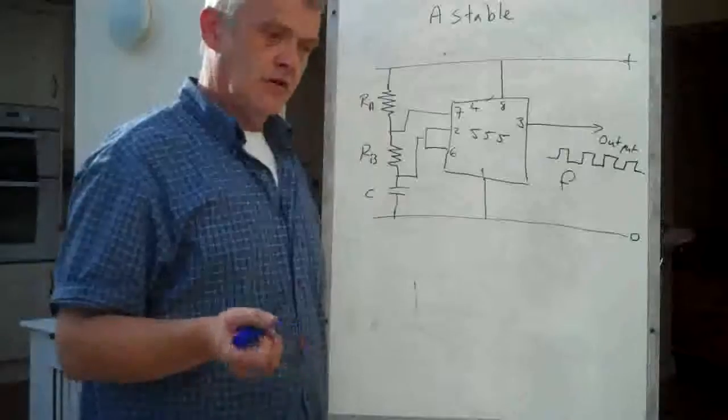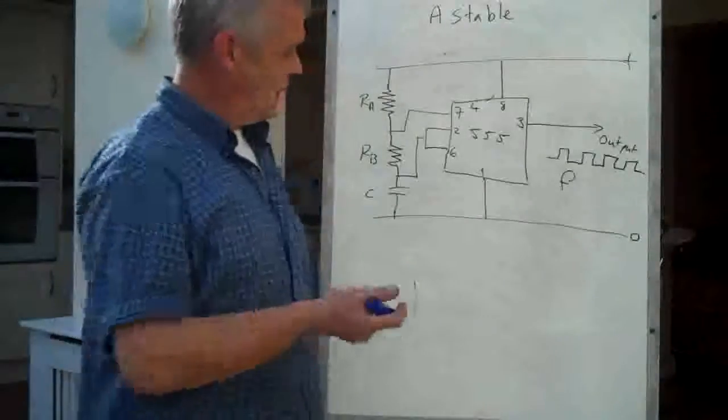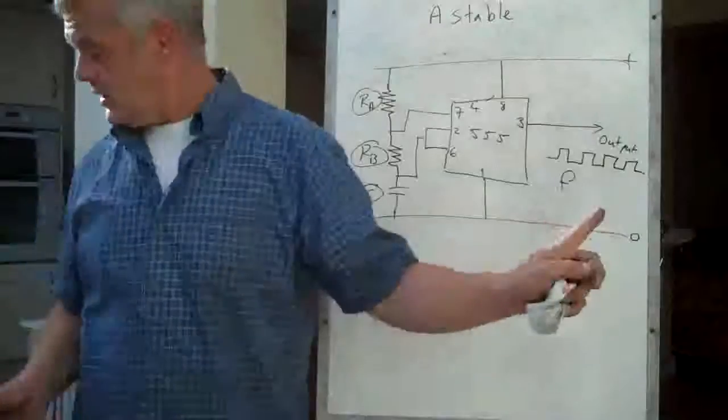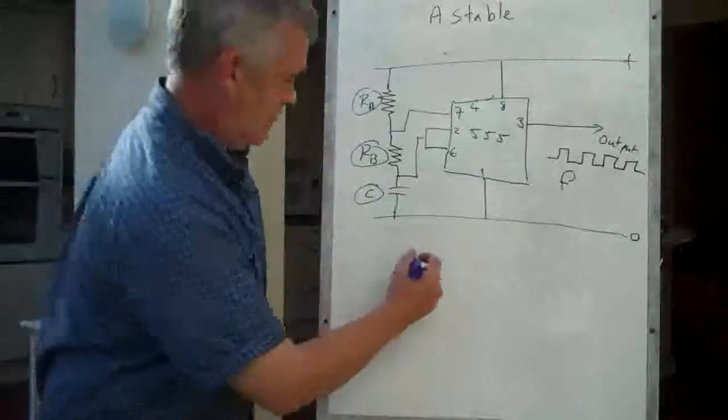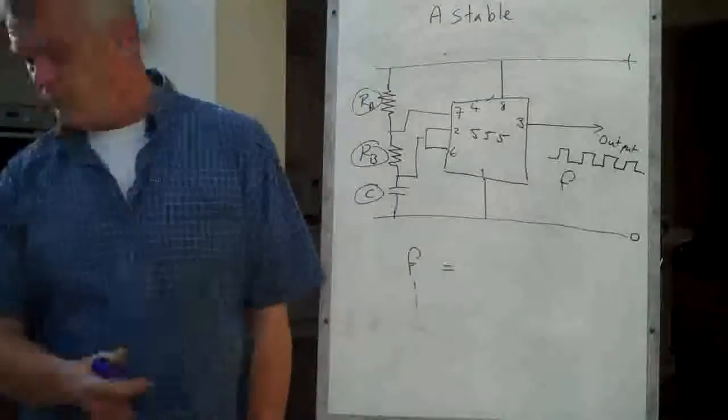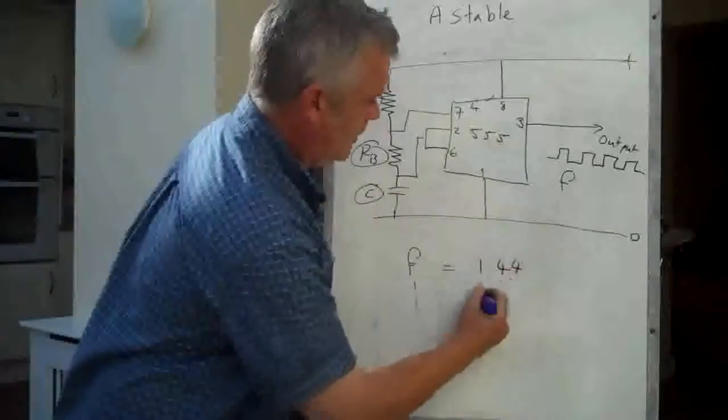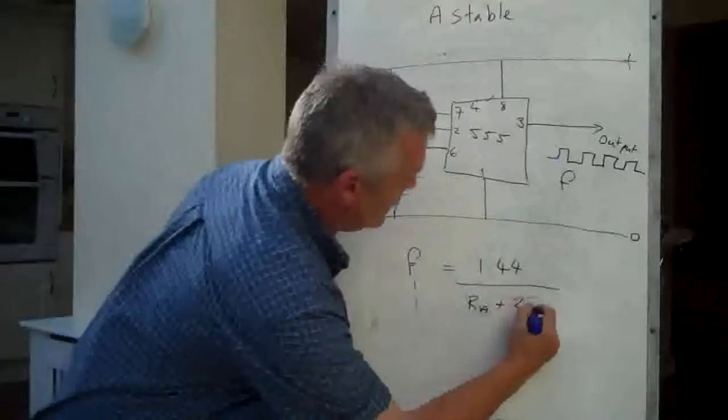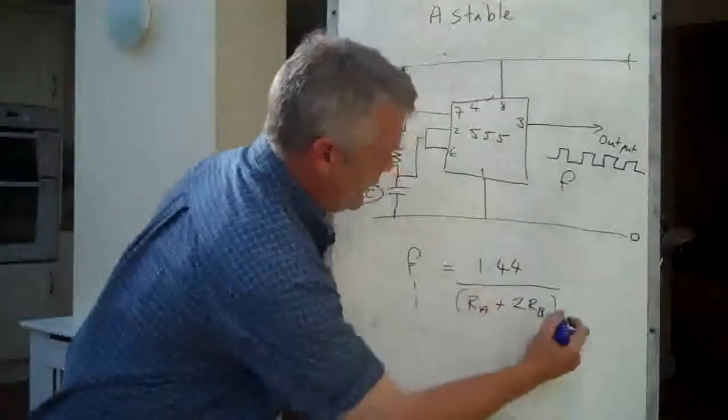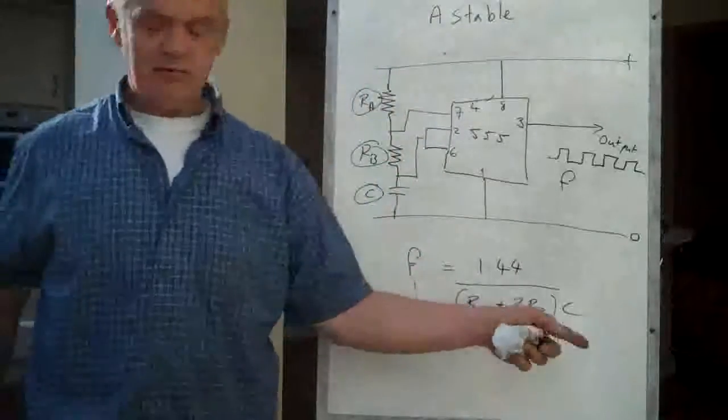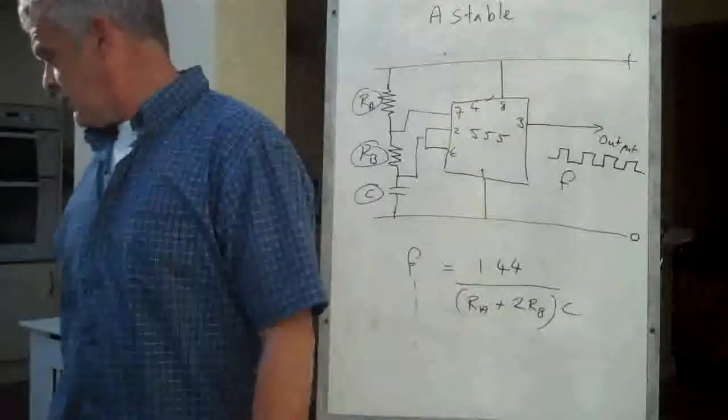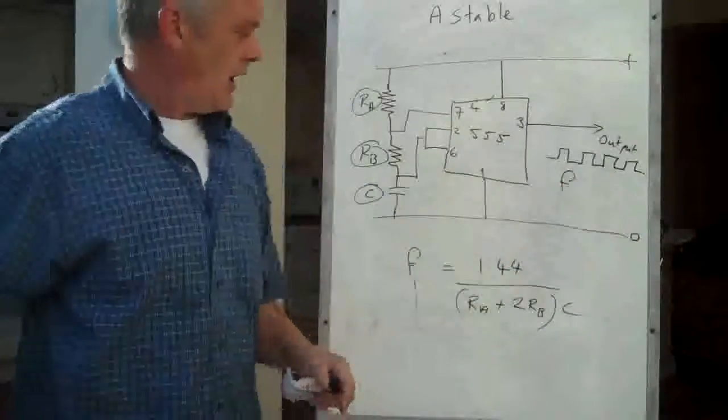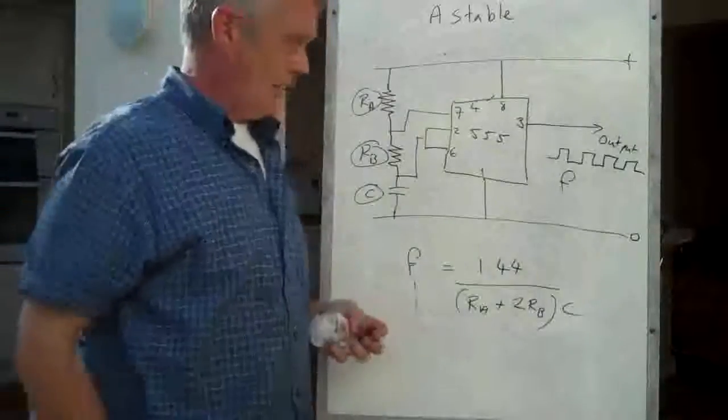Now again, on the net there are lots of calculators and suggestions available for you and what the values of RA, RB, and C would be to give you a fixed frequency. The formula for that is actually frequency is equal to that, 1.44 over RA plus 2RB times C. If you work that one out, then you can work out the frequency that this signal is going to come out at. And again, plenty of programs to help you work that one out.